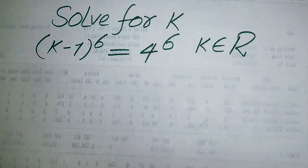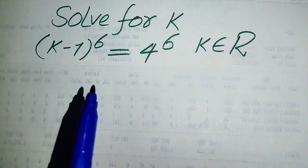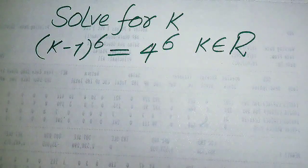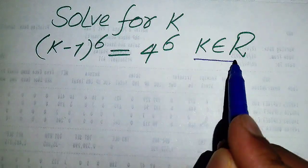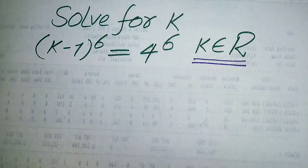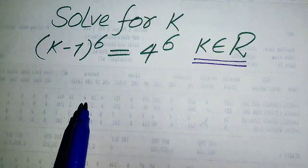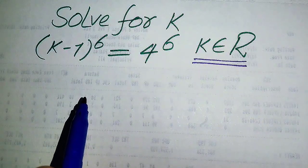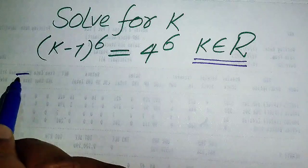Hello everyone. How to solve this problem: for the values of k, if we have (k-1) to the power of 6 equals 4 to the power of 6. We solve this problem for all the values of k, but here we just find all the real roots of this equation, so we find only the real values of k.